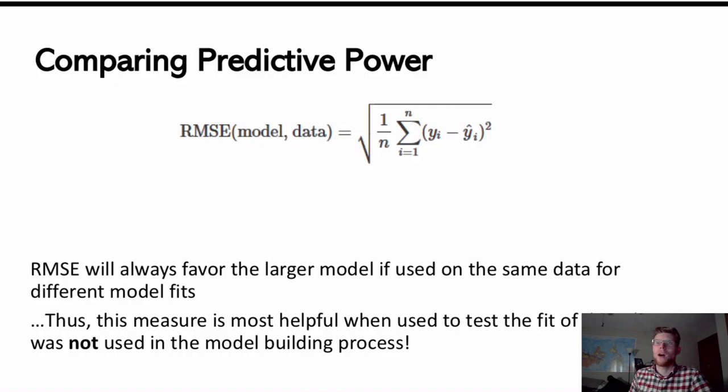To compare predictive power, we often might use this measure, RMSE, which stands for the root mean square error. You might recognize that this formula looks really familiar because it looks a lot like the standard error of the residuals, abbreviated S_E. That's the square root of the sum of the squared residuals divided by N minus 2. S_E is an unbiased estimate of sigma_E, the true standard deviation of the residuals.